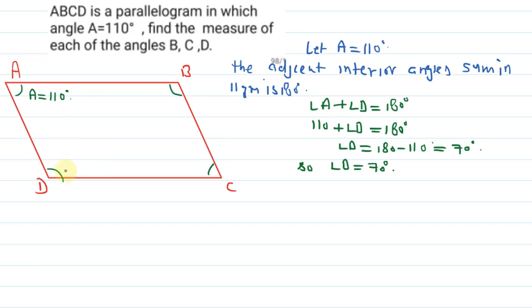Now, we get angle D is equal to 70 degree and our aim to find angle B and angle C. So we know that in parallelogram opposite angles are equal. Here, we know that the opposite angles are equal.